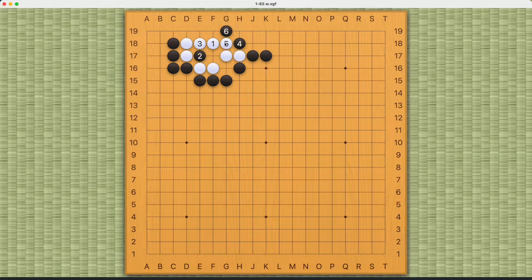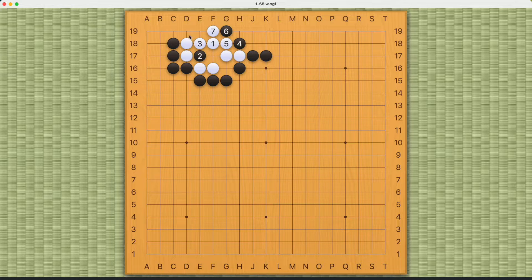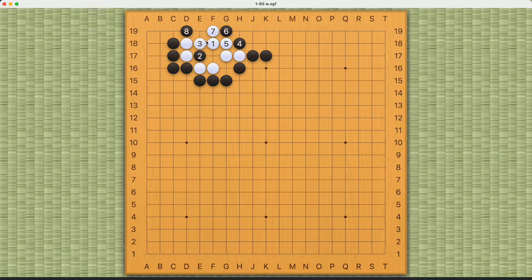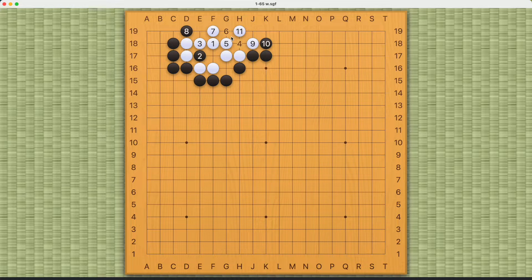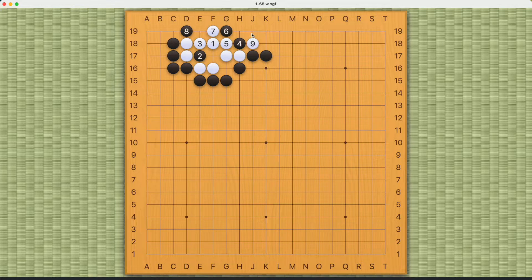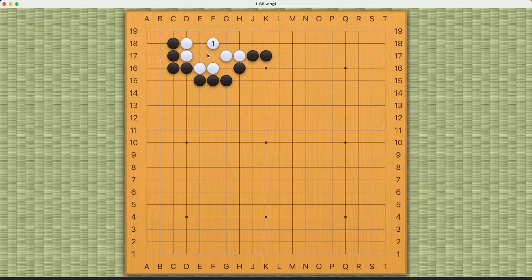Because white can block here, and if black destroys this eye from this side, white can now play at number nine and capture black this way. So there'll be no ko for black to play, and that is why number one here will actually work.